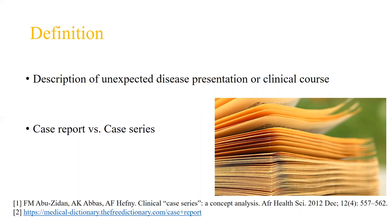There is no consensus about the actual number that defines case reports. Generally speaking, one patient is a case report, but two to four patients can be considered case report or case series depending on the journal. And case series is anything larger than that. So if we define case report as one patient, case series would be two or more patients. If we define case report as one to three patients, case series would be four or more patients.